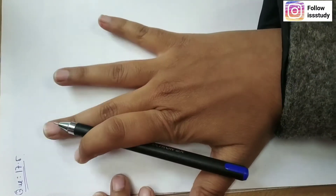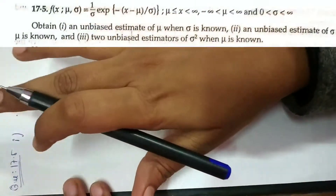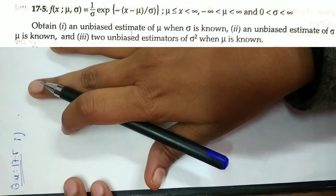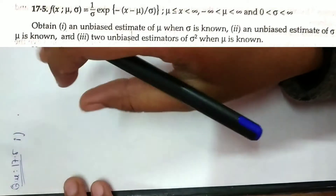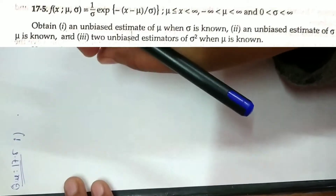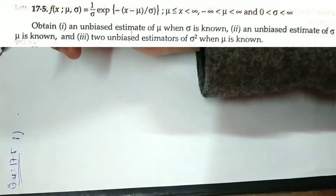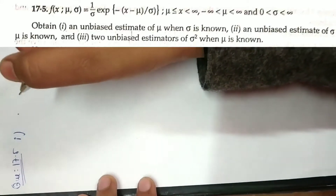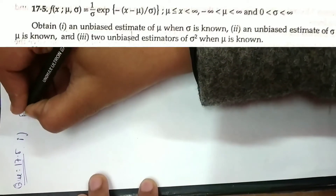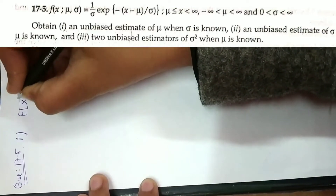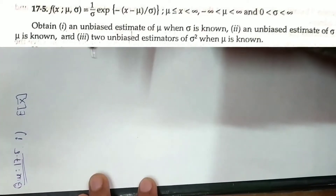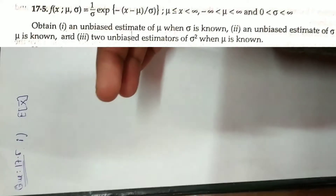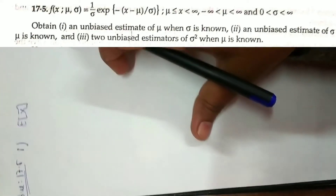Question 17.5 says that we have to find an unbiased estimator of μ when σ is known. Looking at the distribution, this is a normal distribution. You know that in normal distribution, x̄ is an unbiased estimator for μ. If we take x̄ here, then in the exam you will have options given, and you will check your answers one by one to see which answers are correct.